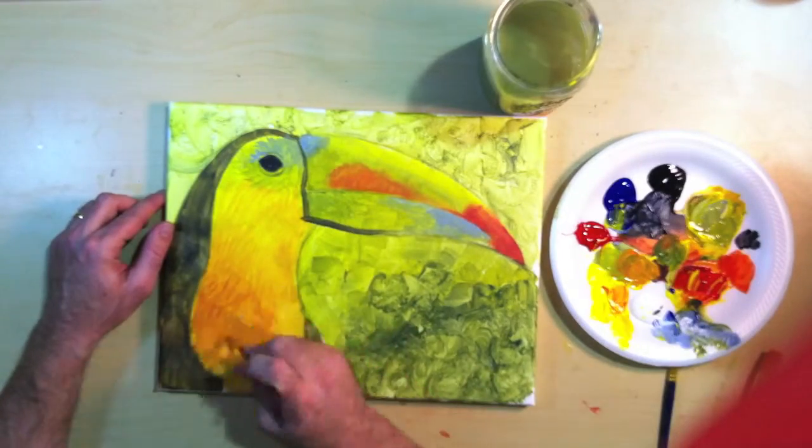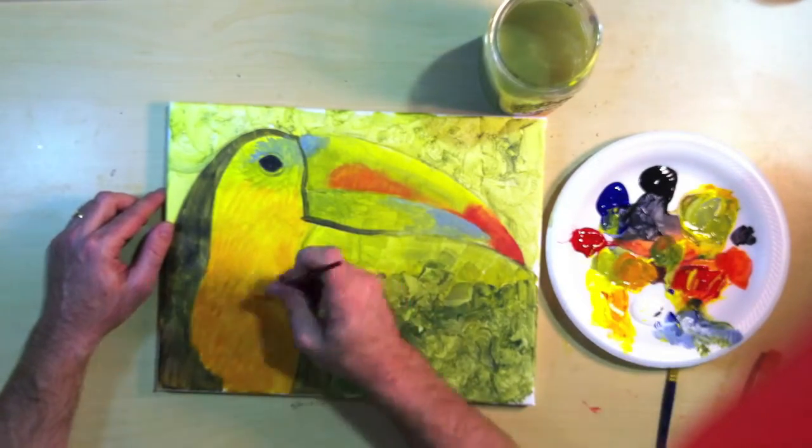You'll notice the areas that I'm starting to go darker and darker are the areas that are a little bit more in shadow.